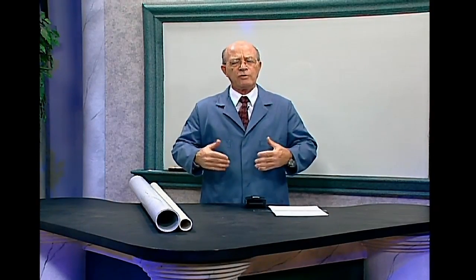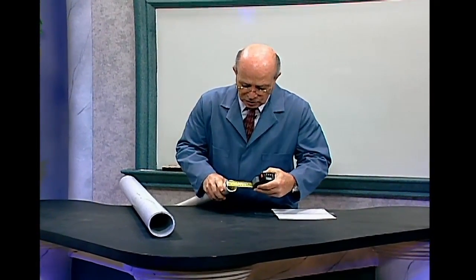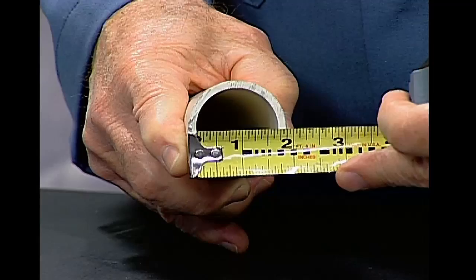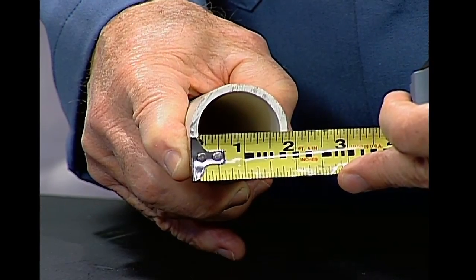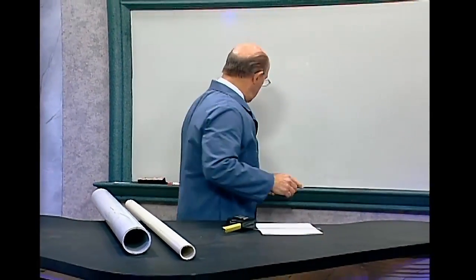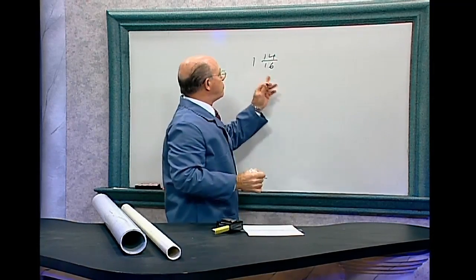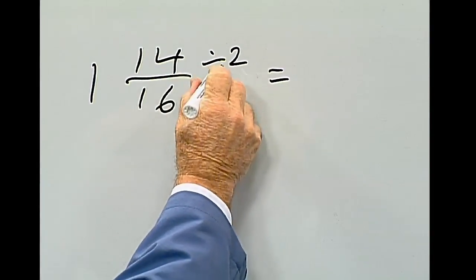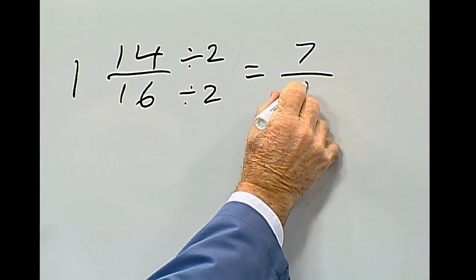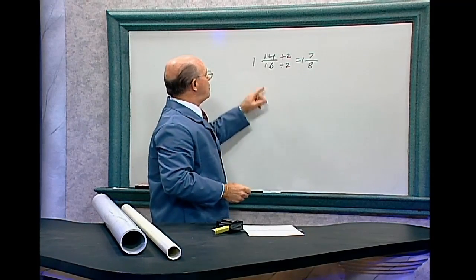Why do we have to reduce fractions? Here are some real-world examples using plastic PVC tubing. If you measure the outside diameter of this tubing and count the spaces at 1 sixteenth each, it measures 14 sixteenths. You wouldn't go to the store and ask for 1 and 14 sixteenths. Dividing each side by 2 gives 7 over 8, so the OD is 1 and 7 eighths — not 1 and 14 sixteenths.